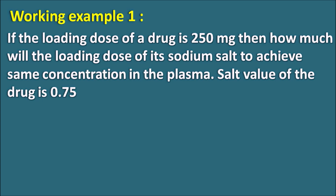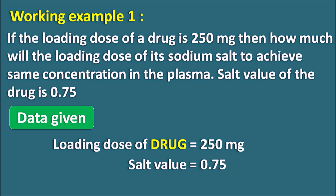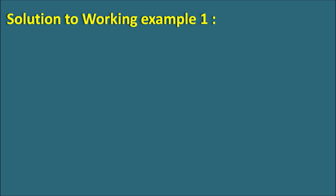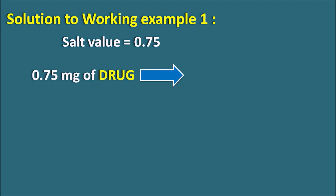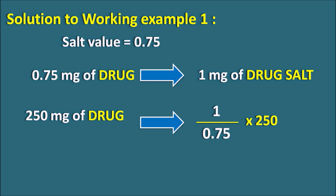Working Example 1: If the loading dose of a drug is 250 mg, how much will be the loading dose of its sodium salt to achieve the same plasma concentration? The salt value is 0.75. A salt value of 0.75 means 0.75 mg of drug is equivalent to 1 mg of drug salt. Therefore, the loading dose of the sodium salt = 1/0.75 × 250 = 333.3 mg.